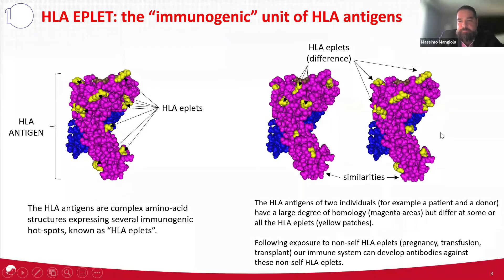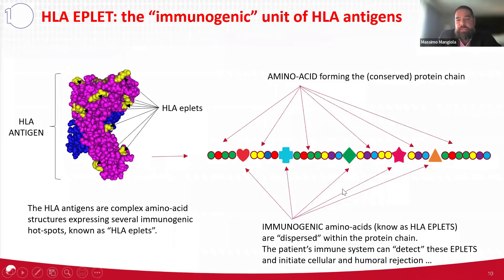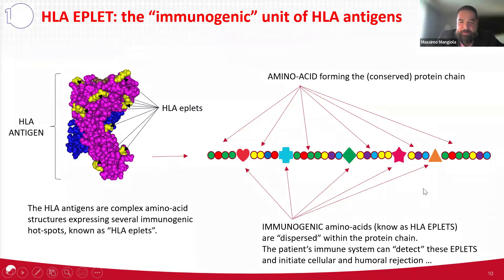Following exposure to a non-self HLA antigen, your immune system can detect those differences and actually develop an immune response against it. To give you a better view of these eplets and where they are, let's imagine we can unravel the HLA molecule structure into a longitudinal chain. This chain is formed by a group of amino acids that are conserved — they form the core structure of the protein chain. Within this core structure, you have dispersed immunogenic amino acids — the eplets — and this is what can cause rejection if your immune system detects them as non-self.